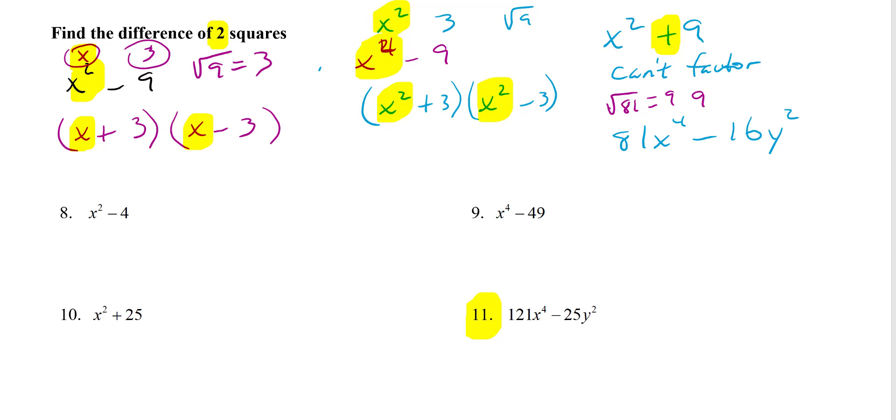So you write on top, you write 9, remember, x squared. 16, the square root of 16 is 4. So you're gonna write a 4 here, and then that's gonna be just y. So these are the two numbers you're gonna use, 9x squared and 4y.